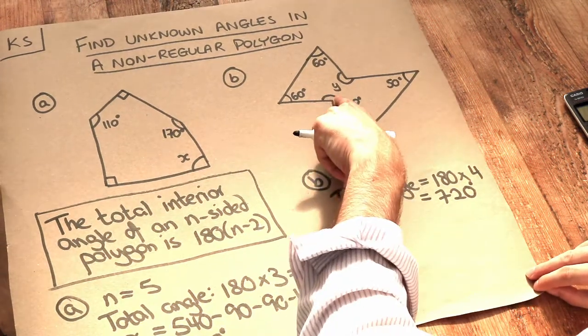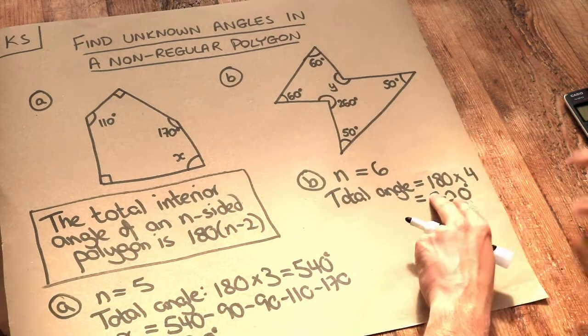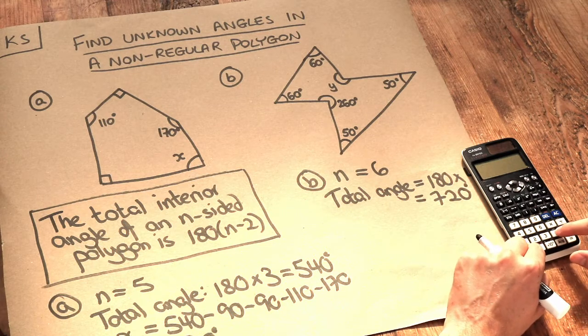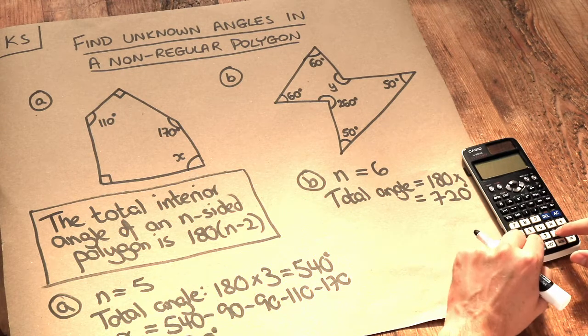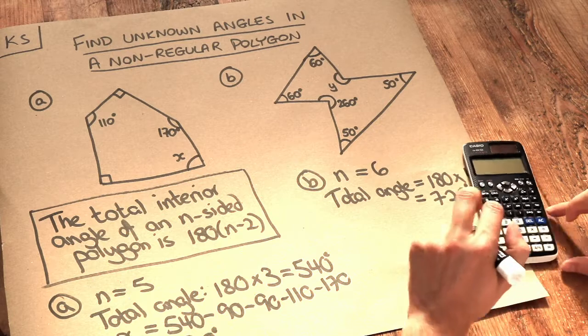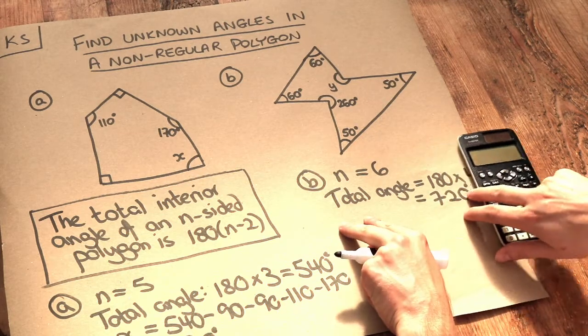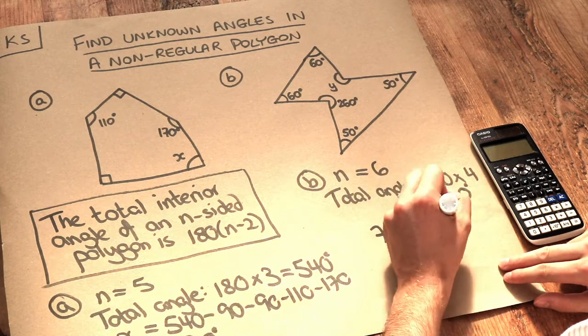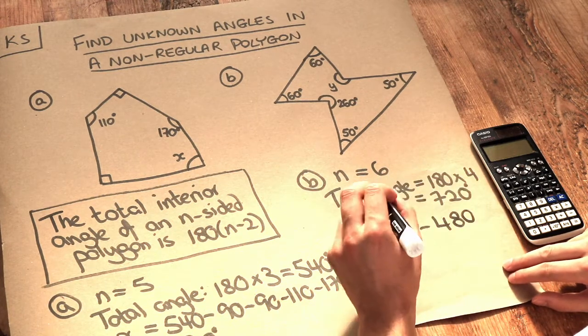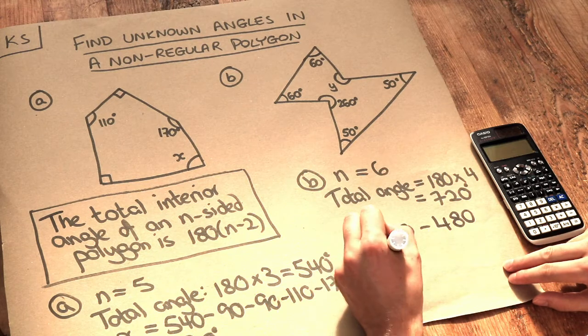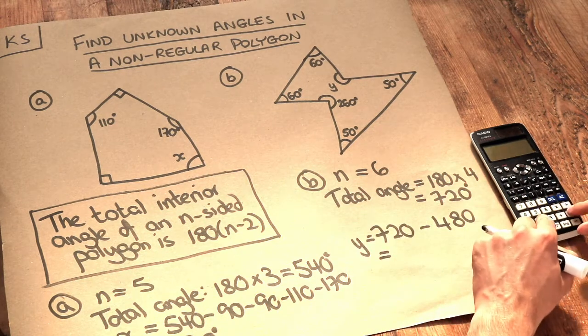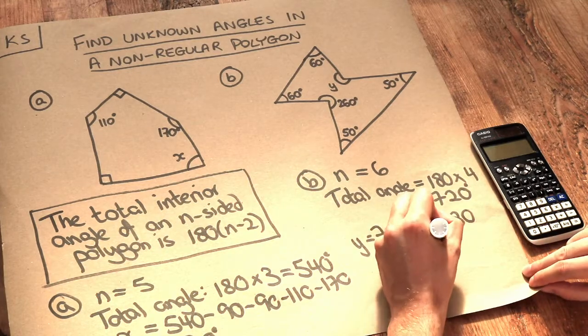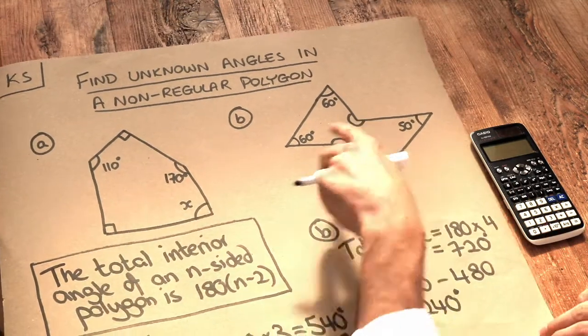And then we just need to add up these angles, so if we do 60 plus 60 plus 50 plus 50 plus 260, that comes to 480, and then we subtract the 480 from 720 to give y. So y is therefore equal to 720 minus 480, which is equal to 240 degrees. So it's a reflex angle, as we can see.